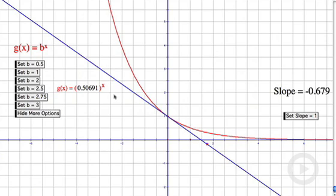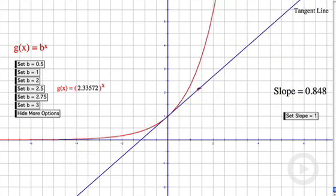And if I moved it so that the tangent line had a negative slope, the base is between 0 and 1.